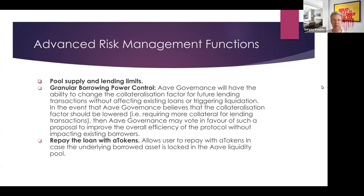Advanced risk management: in Aave V2, you couldn't set supply and lending limits. Now you can limit certain asset supply to, say, $10 million, $20 million, $100 million, or $1 billion. You also have granular borrowing power control.